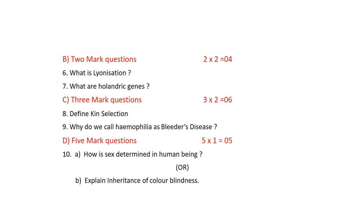How is sex determined in human beings? In human beings, according to the chromosomal theory, females are homogametic and produce only one type of egg, while males are heterogametic and produce two types of sperm — one carrying the X chromosome and one carrying the Y chromosome. The sex is determined by the sperm which fertilizes the egg: X-carrying sperm produces a female, Y-carrying sperm produces a male. This is called Lygaeus-type sex determination.